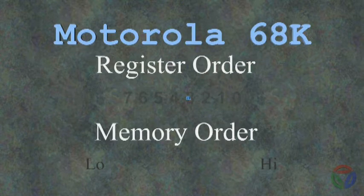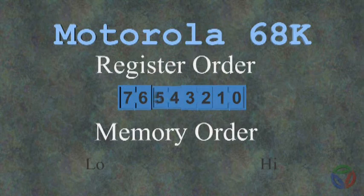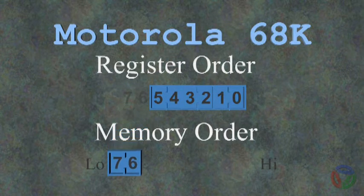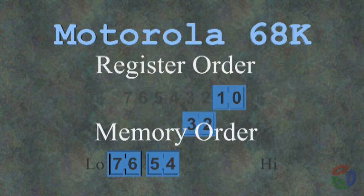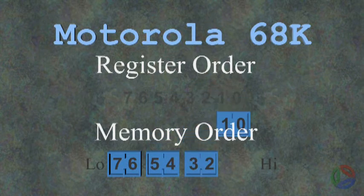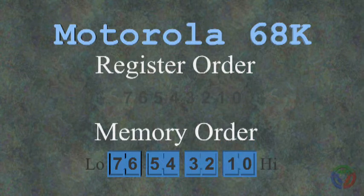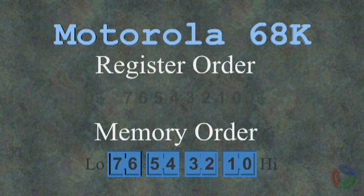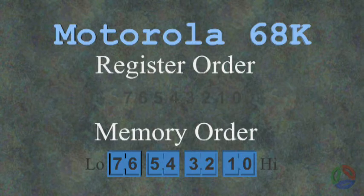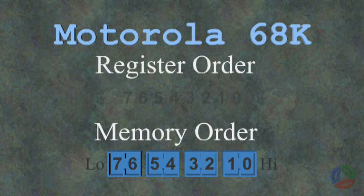Big Endian architectures, such as the Motorola 68K, now from Freescale Semiconductor, store multibyte values high order first. Here we see that the 32-bit register value 0x76543210 is stored to memory in the sequence 0x76543210. This looks right for our Big Endian number representation. If our Arabic numerals were written low order first, then the Little Endian representation would be more familiar to us.